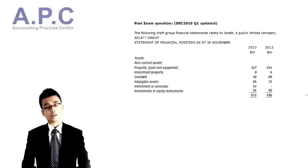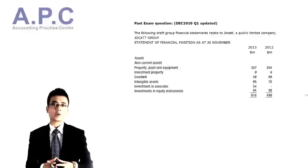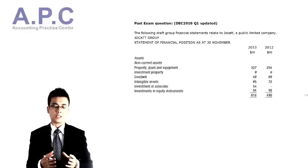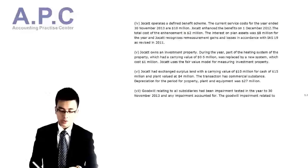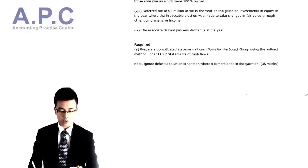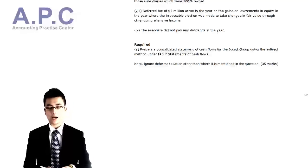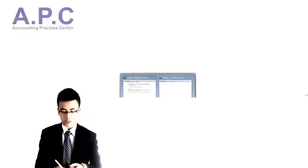Hello, welcome back. This is Steve from ACCAAPC.com. The question we're going to look at is question number one from the December 2010 exam. This question has been published in your study notes so you can see the updated version. The requirement is to prepare a consolidated statement of cash flow for the Jokert group using the indirect method under IAS number 7, statement of cash flows. This question is worth 35 marks.